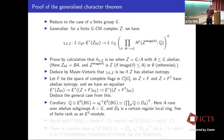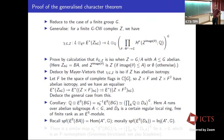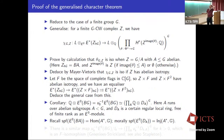What is D_A? Recall we had the formal group scheme G, and the formal spectrum of E^0(BA) should be thought of as Hom(A^*, G) — homomorphisms from the character group A^* into G. There is a closed sub-scheme of Hom(A^*, G) corresponding to injective homomorphisms from A^* to G, and that's what corresponds to the ring D_A.